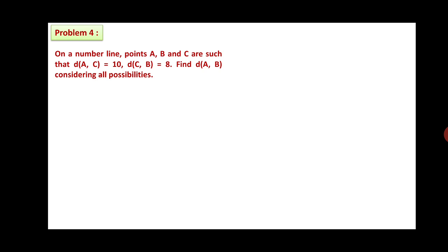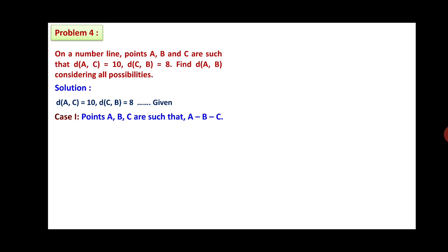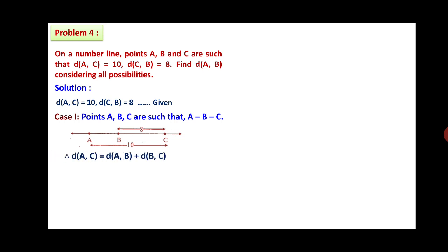Next, problem number 4: on a number line, points A, B and C are such that distance AC is 10 and distance CB is 8. Find distance AB, considering all possibilities. There exist three cases. Case 1: B is between A and C (betweenness A, B, C). Distance AC equals distance AB plus distance BC. Therefore, 10 equals distance AB plus 8. Therefore, distance AB equals 10 minus 8, so distance AB is 2.